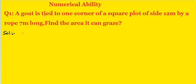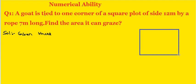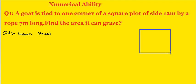Solution. First of all, given that a goat is tied to one corner of a square plot with side 12 meters. The rope is 7 meters long.